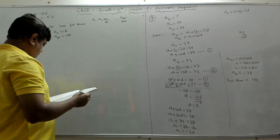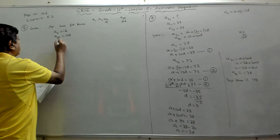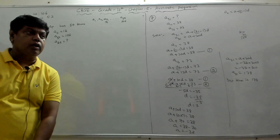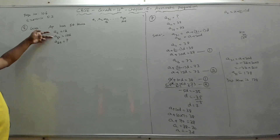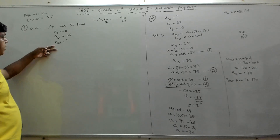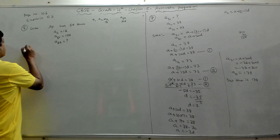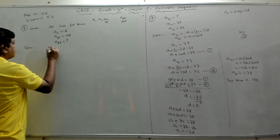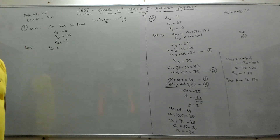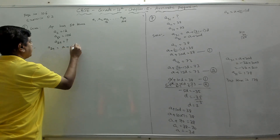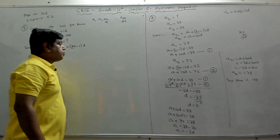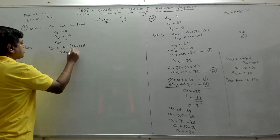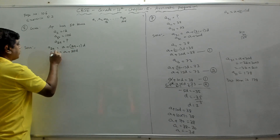We have to find a29. Using the formula: a29 = a + (29−1)d = a + 28d. To find a29, we need a and d. From a3 = 12: a + 2d = 12 — equation 1. From a50 = 106: a + 49d = 106 — equation 2.